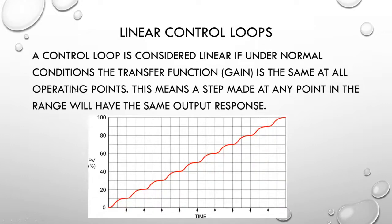We'll start out talking about linear control loops. A control loop is considered to be linear if under normal conditions the transfer function or the gain is the same at all operating points. This means that a step made at any point in the range will have the same output response. The graph shown has 10% input changes, and every step is consistently a 10% output change throughout the operating range from 0 to 100%.